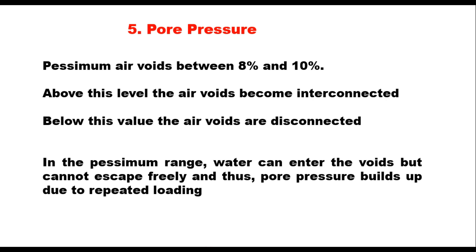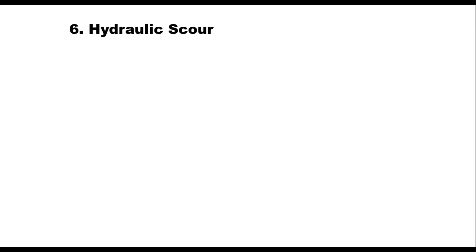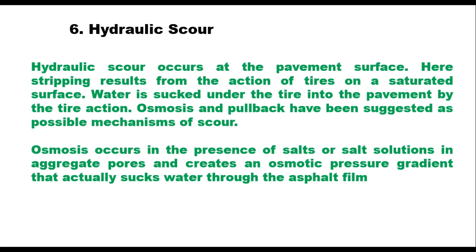Hydraulic scour is also considered as a reason for stripping. It occurs at the pavement surface, where stripping results from the action of tires on a saturated surface. Water is sucked under the tire into the pavement by tire action. Osmosis and pullback have been suggested as possible mechanisms of scour. Osmosis occurs in the presence of salt or salt solutions in aggregate pores, creating an osmotic pressure gradient that sucks water through the asphalt film.